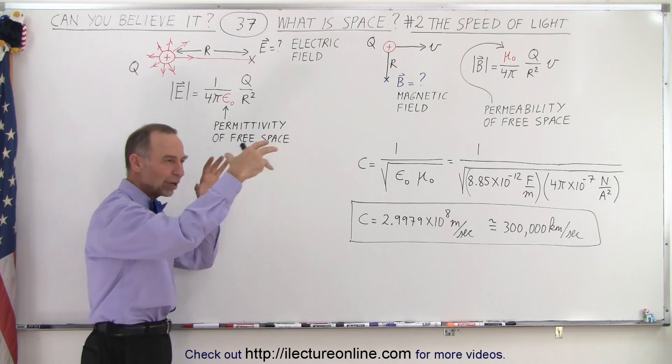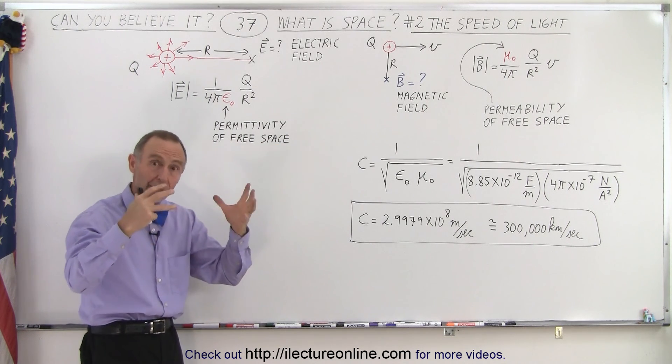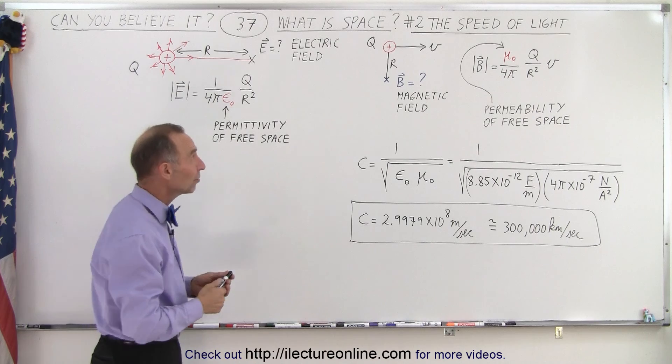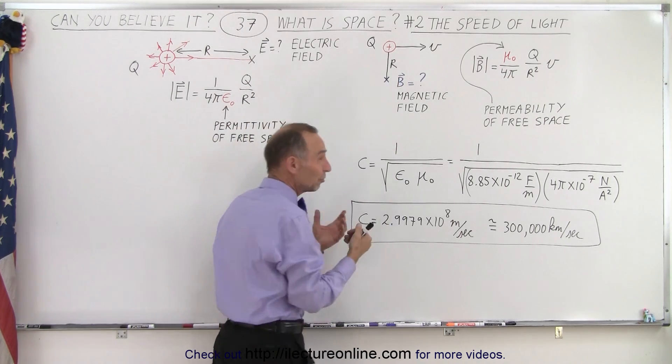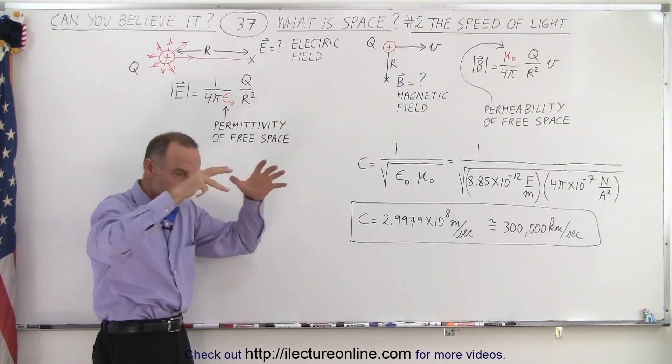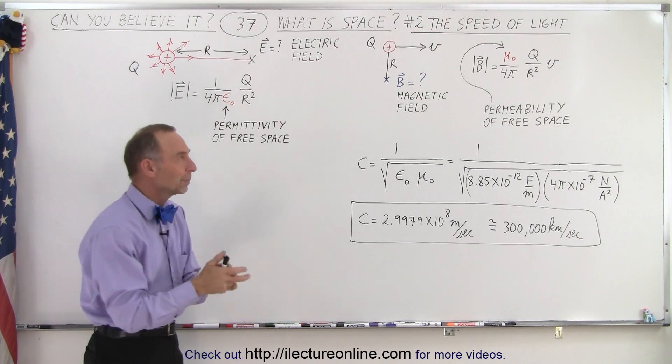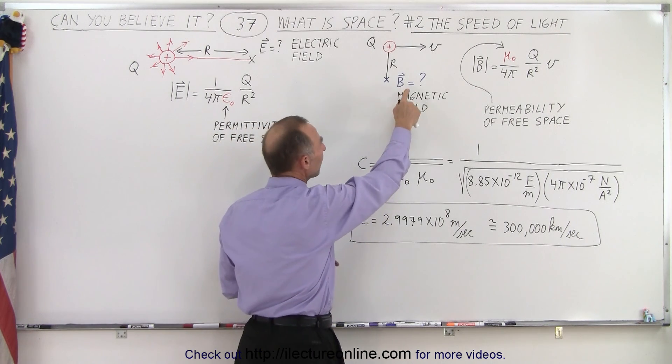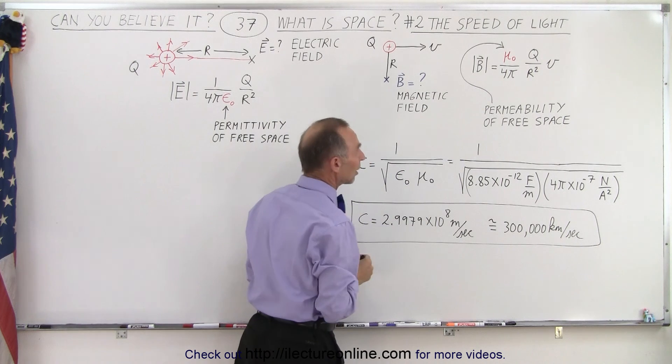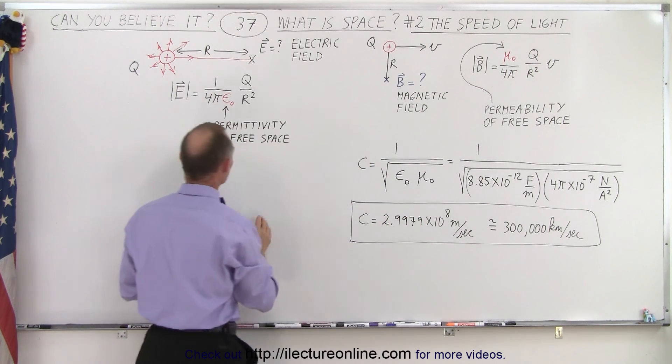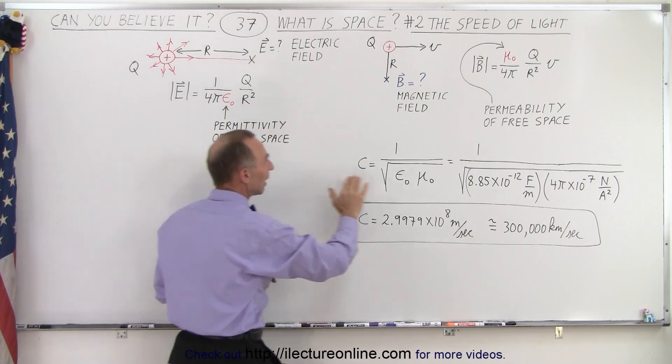Likewise, when a charge in space moves through space, it creates a magnetic field around it. And the strength of that magnetic field is also controlled by a specific constant that we discovered. Those constants are called the permittivity of free space and the permeability of free space.